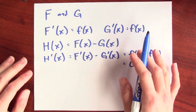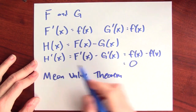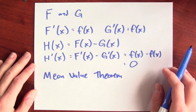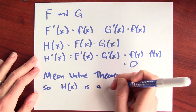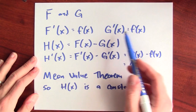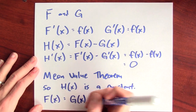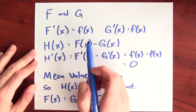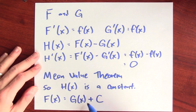The derivative of big H is 0. If you think back to the Mean Value Theorem from earlier in the course: if a function's derivative is equal to 0 and that function is defined on the whole real line, then that function is a constant. So H(x) is a constant. That means the difference between F and G — these two antiderivatives for little f — is just some fixed constant. In other words, F(x) = G(x) plus some constant. If a function has two different antiderivatives and is defined on the whole real line, those two antiderivatives differ by a constant.